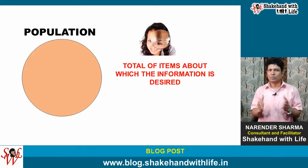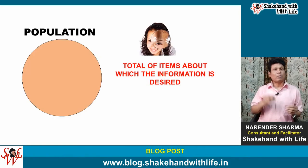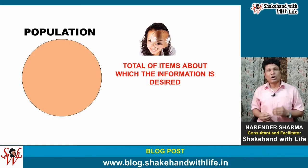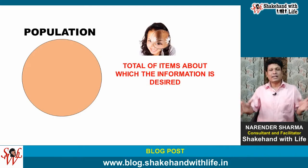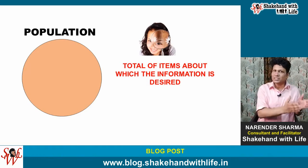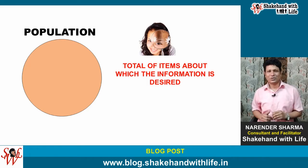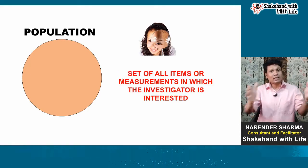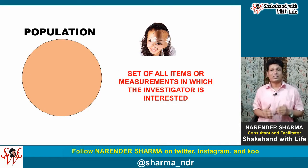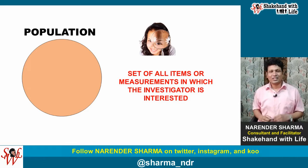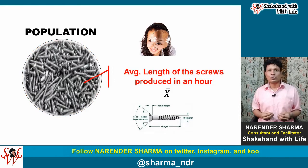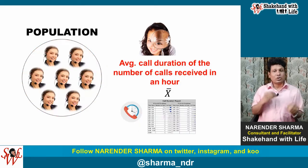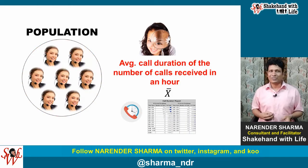Now, turning to Population. The term Population refers to the total of the items about which information is desired, or the set of all items or measurements in which the investigator is interested. For example, the average length of the number of screws produced in an hour, or the average call duration of the number of calls received in an hour.